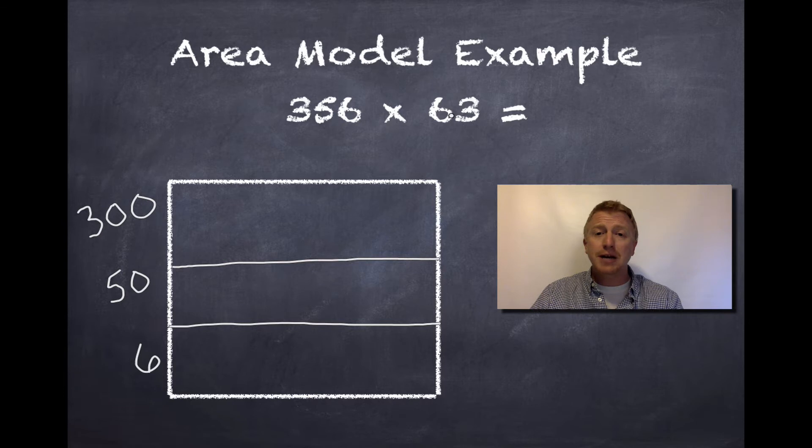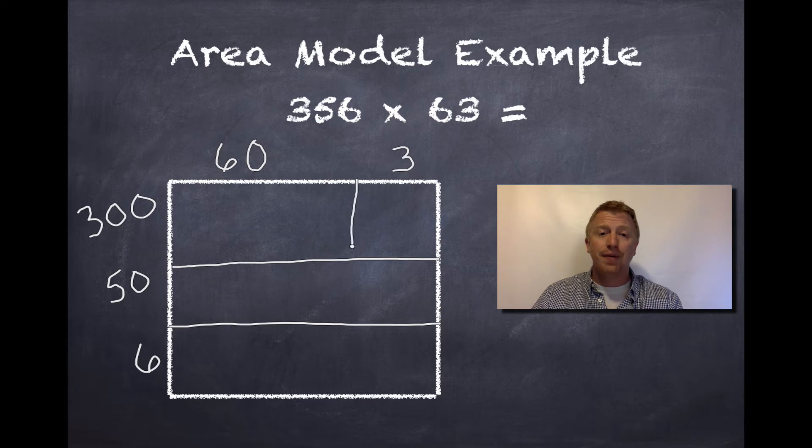Let's move to 63. Now, the 6 again is in the tens place. So, what's it worth? Is it worth just 6? No, guys. You guessed it. It's worth 60. And now, my 3, which is in my ones place, is just worth 3. Just like I did down here, I'm going to separate these two numbers with a line.